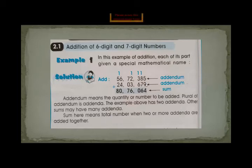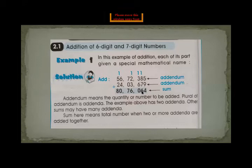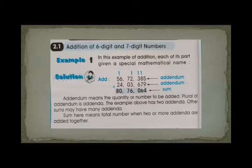Always start adding or subtracting from the right. In addition, 5 plus 9 equals 14: write 4 and carry 1 to the tens place. Then 8 plus 7 equals 16: write 6 and carry 1 to the hundreds place. 6 plus 3 equals 9, plus the carry of 1 equals 10: write 0 and carry 1 to the thousands place. 3 plus 2 equals 5, plus carry 1 equals 6.